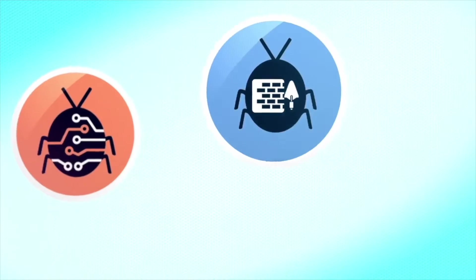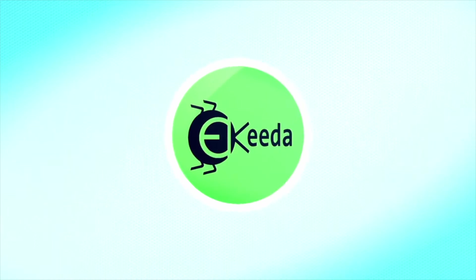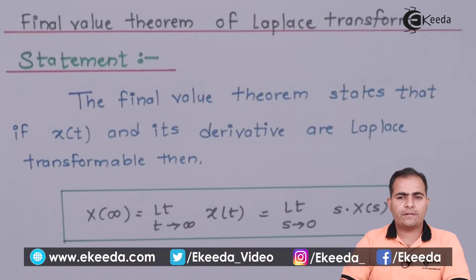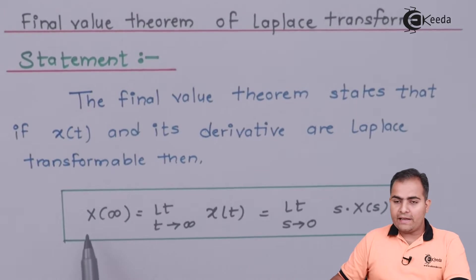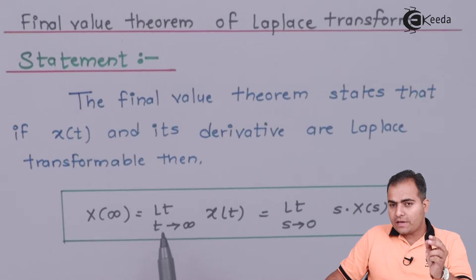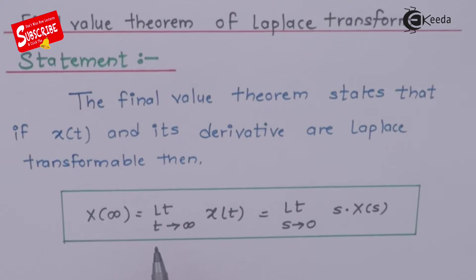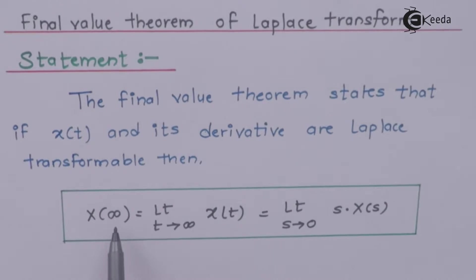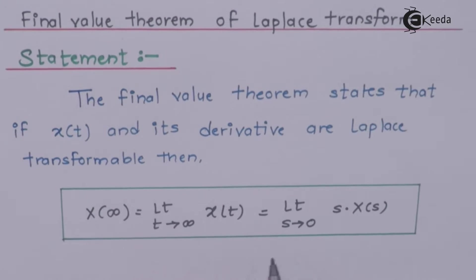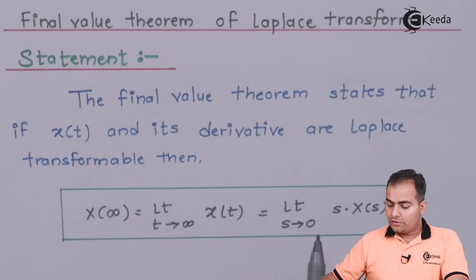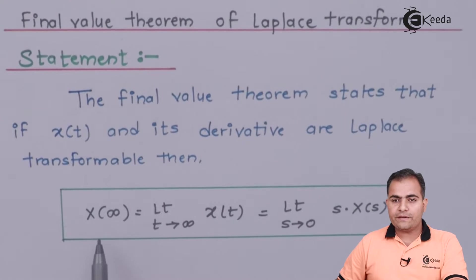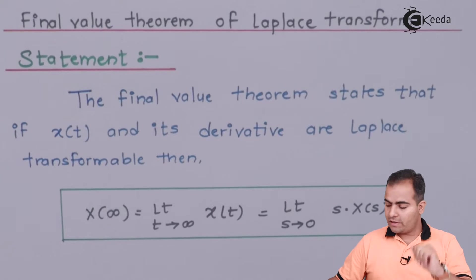The statement: any continuous-time function signal x(t) is expressed in terms of x(s), which is the definition of the Laplace transform. According to the final value theorem, x(∞) — the function value at t equals infinity — is found by applying limits. The result is: x(∞) = limit as s tends to 0 of s·X(s). The theorem states that x(t) and its derivative are completely transformable if and only if x(∞) equals limit s→0 of s·X(s).